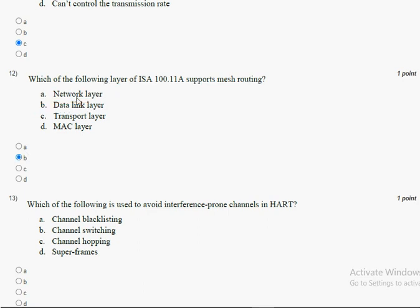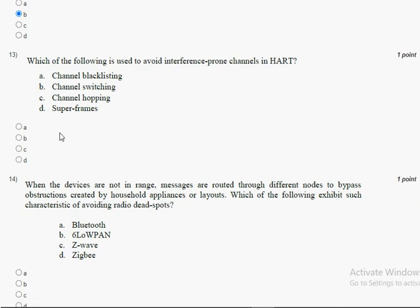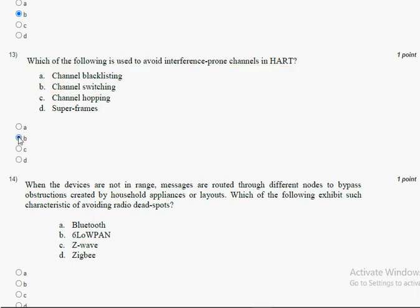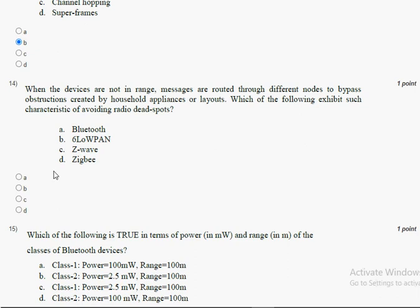The thirteenth question: which of the following is used to avoid interference-prone channels in HART? The answer for the thirteenth question is option B, channel switching. Mark option B as the correct answer for the thirteenth question.